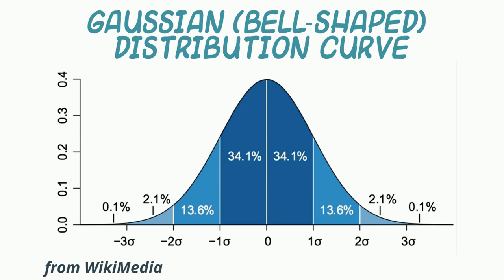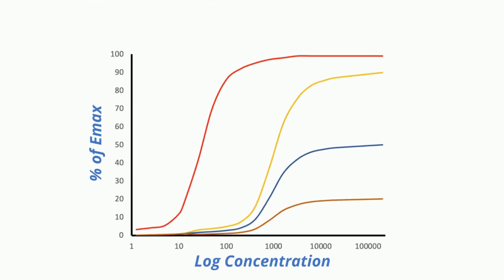It's important to note that variability in response to a given drug can vary between patients — some patients consistently responding more to a drug and some responding less, as reminded by this Gaussian or bell-shaped distribution curve of patient responses to a drug. However, what we'd like to discuss now is how the response to a drug can change with time within a specific patient following initial administration. With that background, what receptor phenomena can occur after initiation of drug administration?